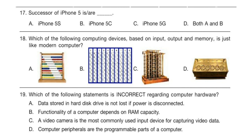Question 18. Which of the following computing devices, based on input, output, and memory, is just like a modern computer? Question 19. Which of the following statements is incorrect regarding computer hardware? A: Data stored in hard disk drive is not lost if power is disconnected. B: Functionality of a computer depends on RAM capacity. C: A video camera is the most commonly used input device for capturing video data. D: Computer peripherals are the programmable parts of a computer. Choose which is incorrect and write it down on paper.